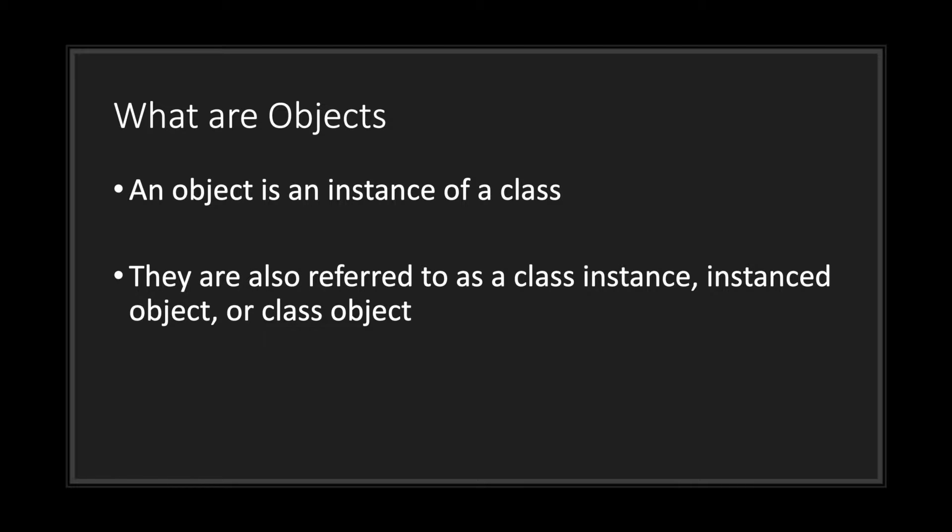What exactly is an object? Well, an object is an instance of a class. They can be referred to as class instances, instance objects, or class objects.